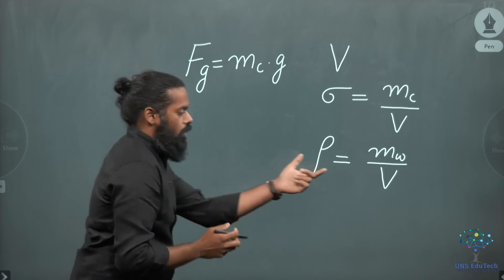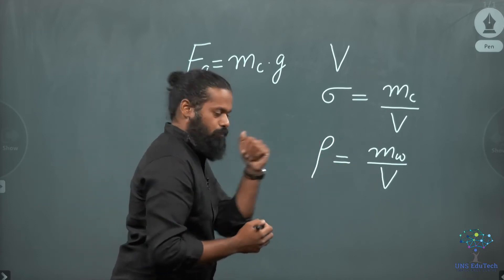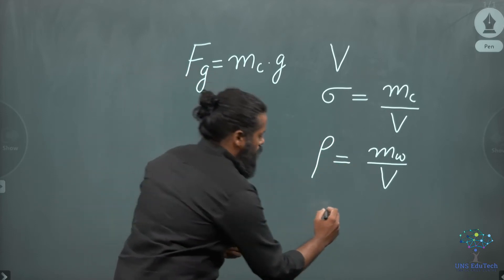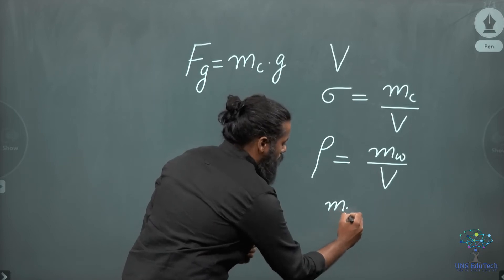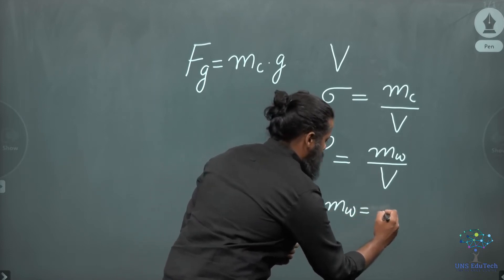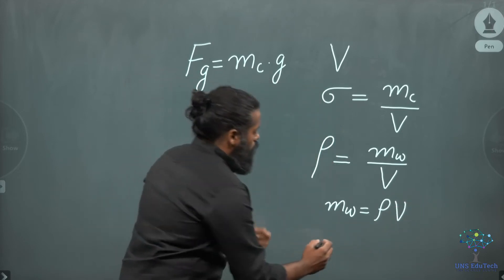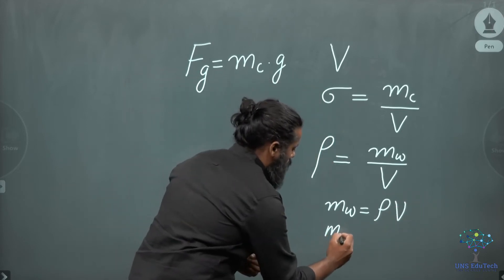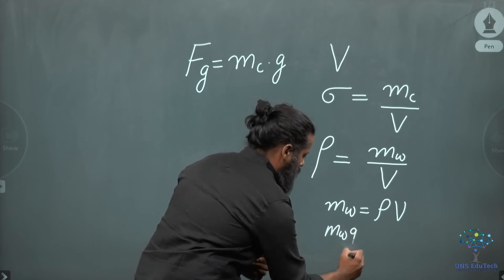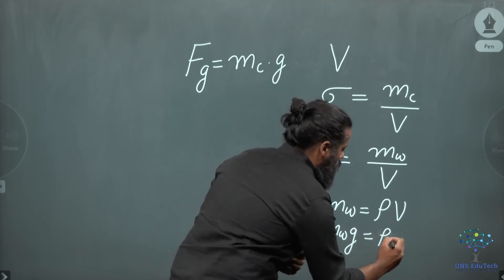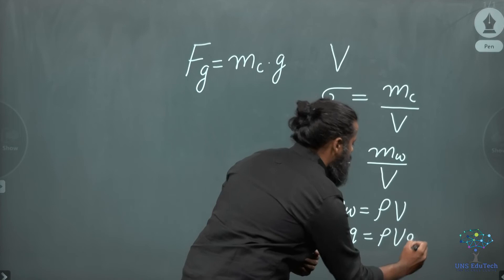Now here, we can easily find out the weight of the liquid displaced. First we can find out the mass of the water displaced. That will be equal to rho times V. So here, weight will be equal to M water into G. That will be equal to rho V into G.